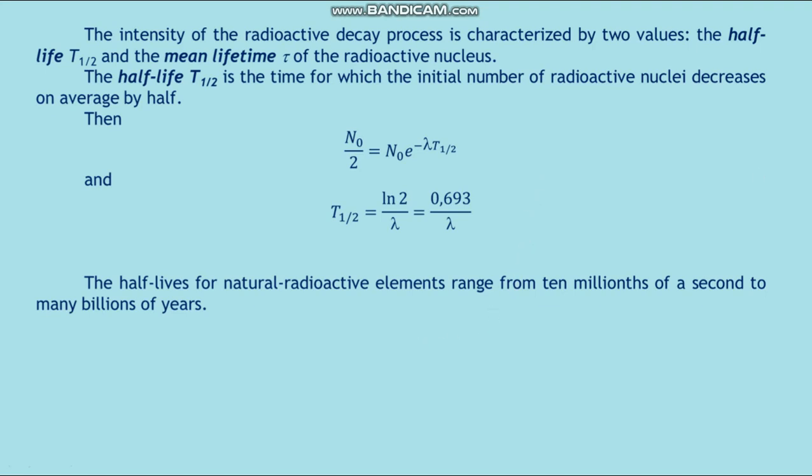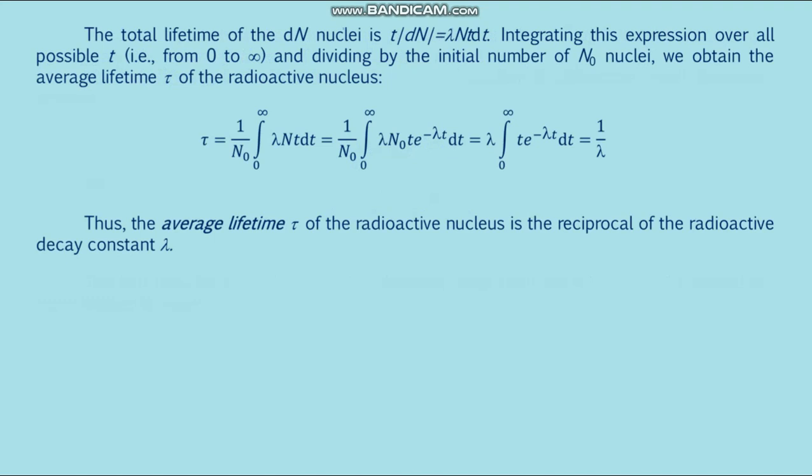The half-life for natural radioactive elements ranges from 10 millionths of a second to many billions of years. The total lifetime of the dN nuclei is t × dN = λN × t × dt. Integrating this expression over all possible t from 0 to infinity and dividing by the initial number of N₀ nuclei, we obtain the average lifetime τ of the radioactive nucleus. τ = 1/λ. Thus, the average lifetime τ of the radioactive nucleus is the reciprocal of the radioactive decay constant λ.